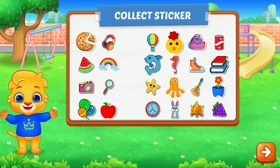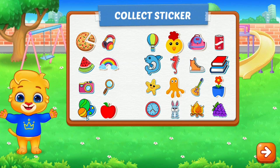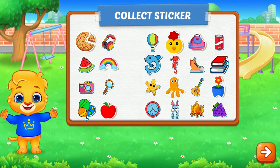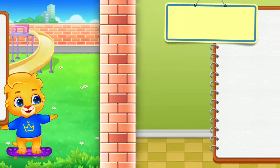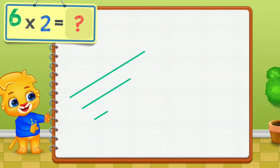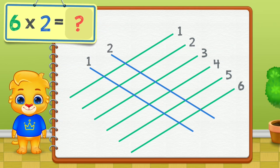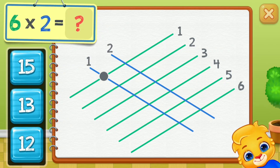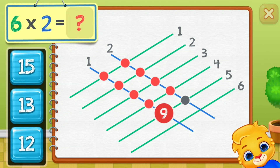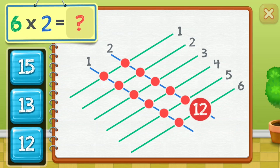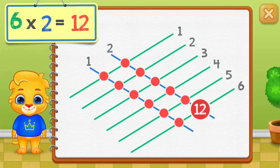Poop! Poop! Poop! Poop! One, two, three, four, five, six, seven, eight, nine, ten, eleven, twelve. Six times two equals twelve.